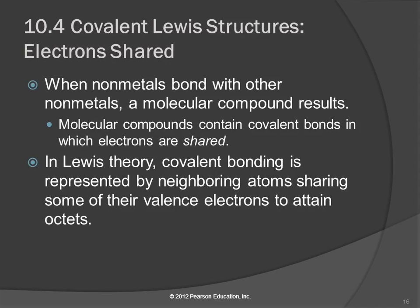In a covalent bond, we've got electrons being shared. Covalent bonds happen between nonmetals sharing electrons. We're going to represent this by neighboring atoms sharing some of their valence electrons to get octets. In a metal-nonmetal interaction, the metal is willing to give up electrons and the nonmetal is willing to accept them. When you have two nonmetals and they're both trying to get electrons, nobody's willing to give them up — they'll share instead.